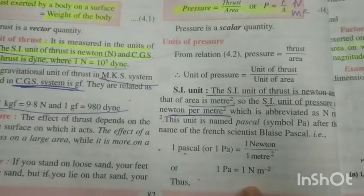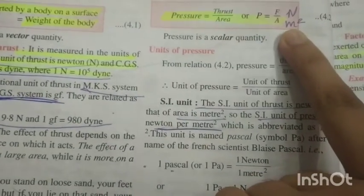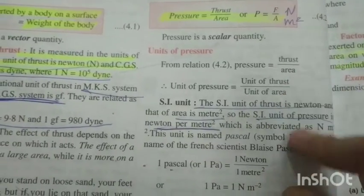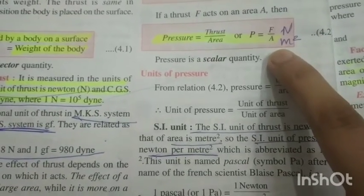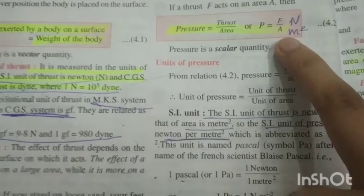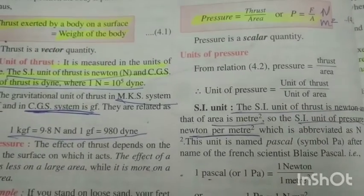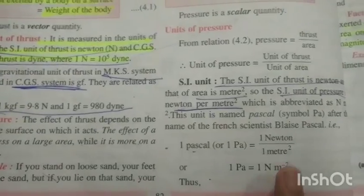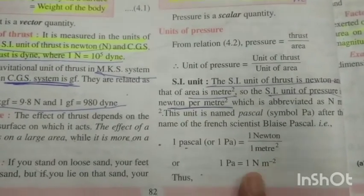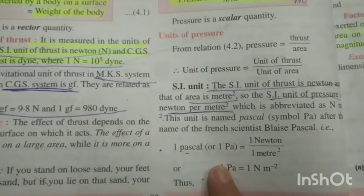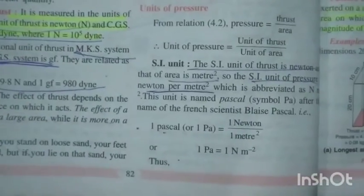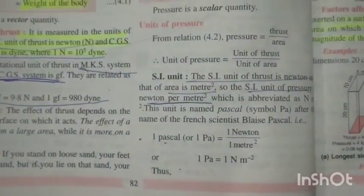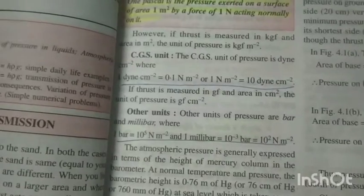The SI unit of pressure is Newton metre minus two, and the CGS unit is dyne per centimetre squared. One Newton metre minus two is directly called the Pascal — it was named after the very famous French scientist Blaise Pascal. So you could write the SI unit of pressure as Pascal, or Newton per metre squared.